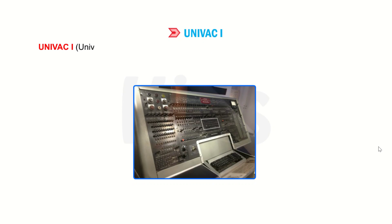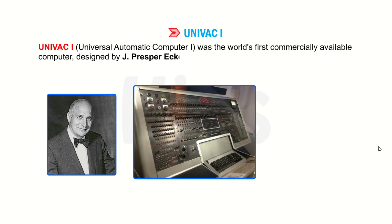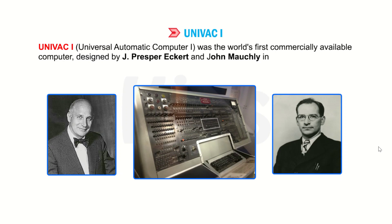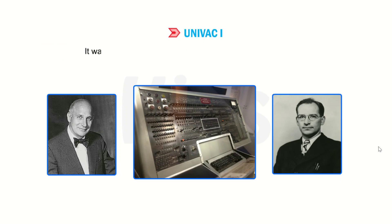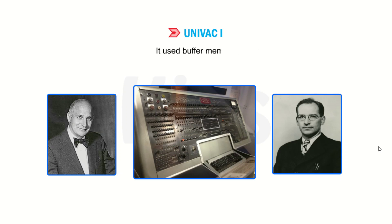UNIVAC 1 — Universal Automatic Computer 1 — was the world's first commercially available computer, designed by J. Presper Eckert and John Mauchly in 1951. It was the first computer to handle both numeric and text data. It was also the first computer equipped with a magnetic tape unit. It used buffer memory.